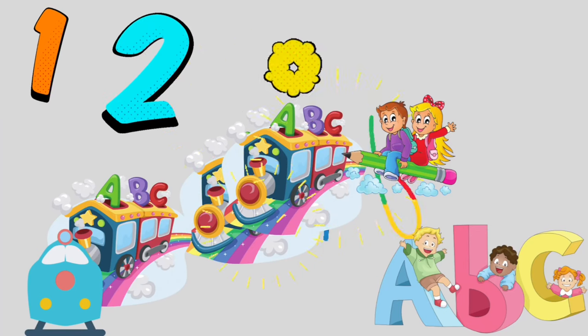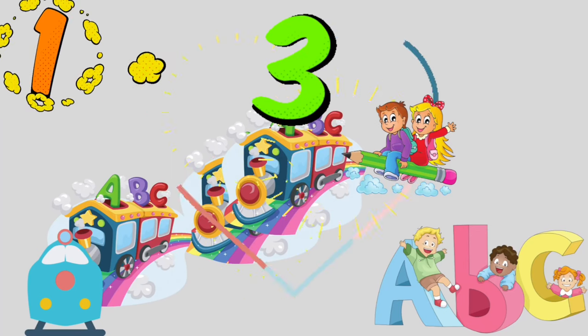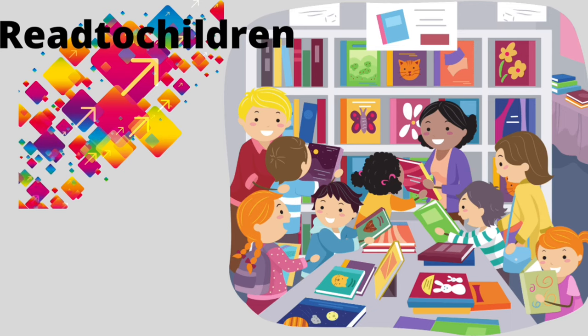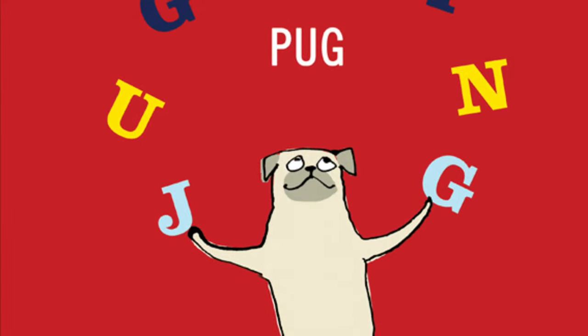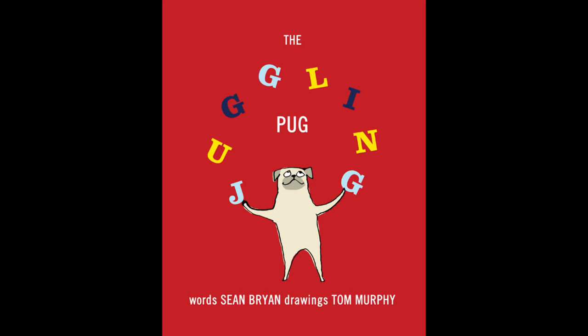Hello, hello my friends, welcome to another amazing read. Go grab your stuff, let's do this. Today's read is called The Juggling Pug, and the words are by Sean Bryan and the drawings are by Tom Murphy.